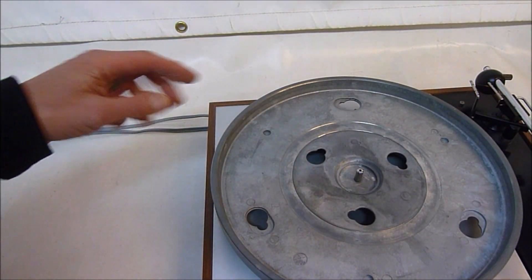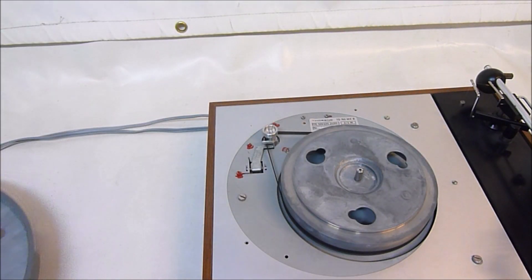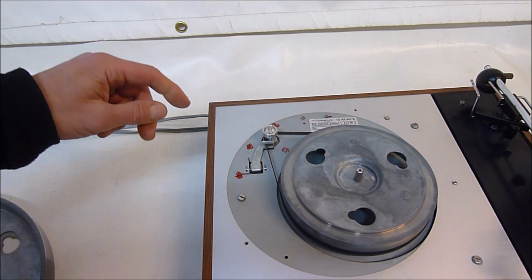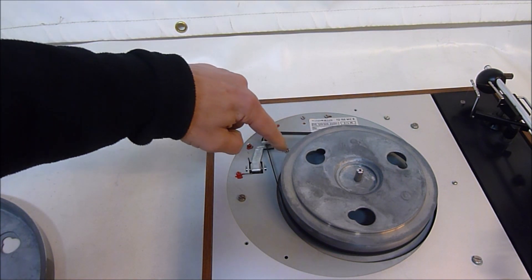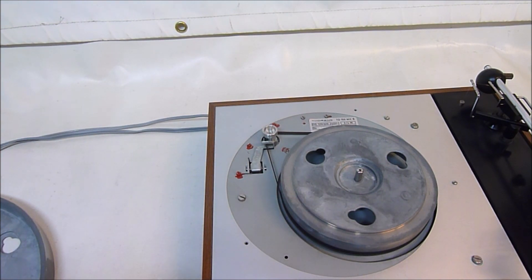So now with the motor azimuth set correctly, we can remove the platter. And at this point, it would be a good idea to just reseal these three screws with thread seal or nail varnish will do the job.